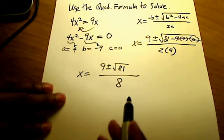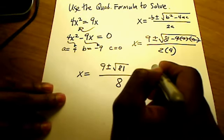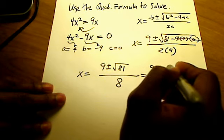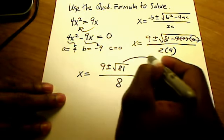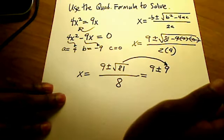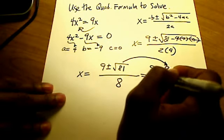Well, we can simplify that even a little bit more. That just shrinks down to be 9 plus or minus 9, because again, the square root of 81 is just becoming that 9 right there. All over 8.